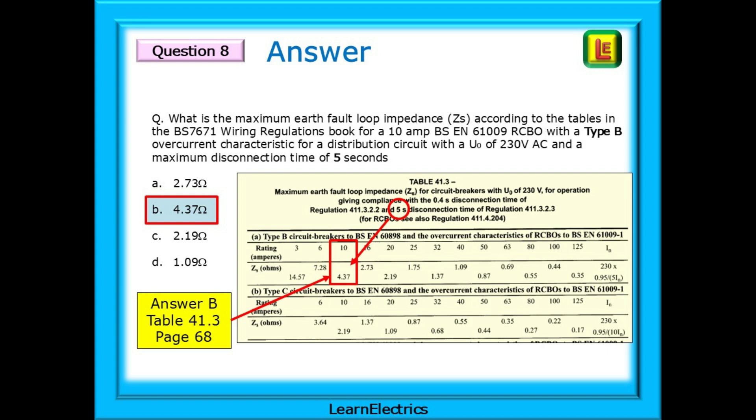So, look in the index on page 583 for disconnection times, final circuits and you will be directed to table 41.1. And since the question mentions tables, just turn a page or two to find table 41.3 for circuit breakers and RCBOs.